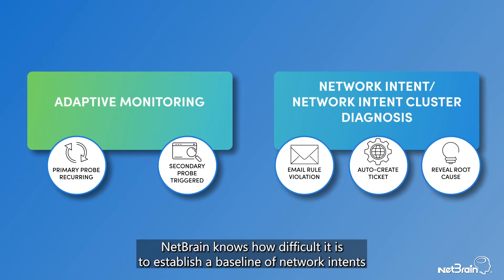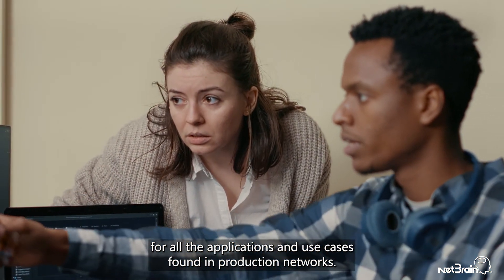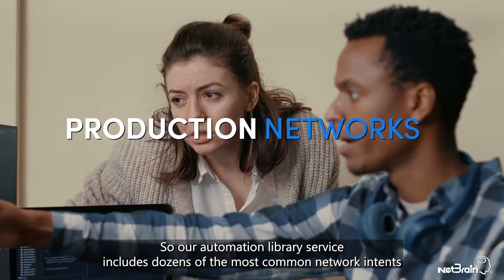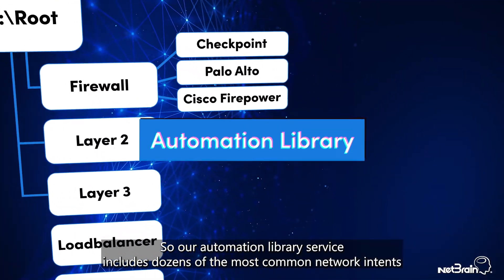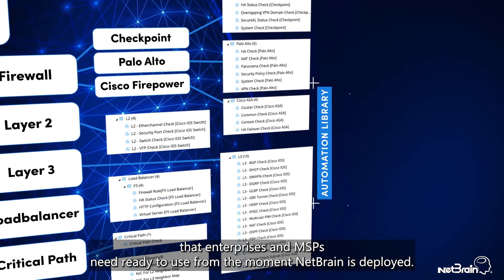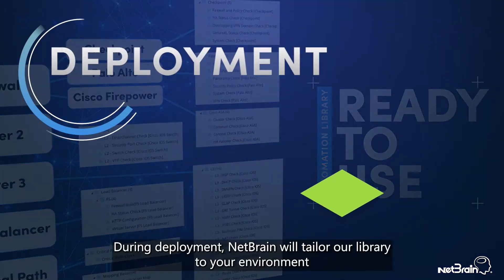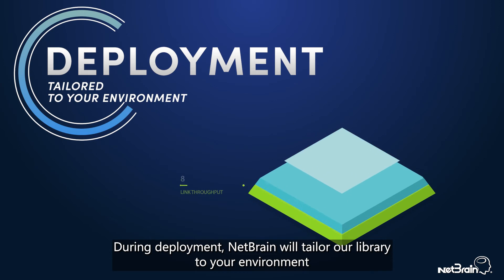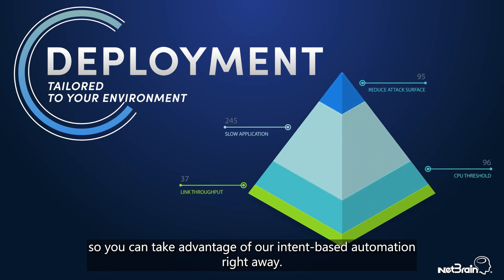NetBrain knows how difficult it is to establish a baseline of network intents for all the applications and use cases found in production networks, so our automation library service includes dozens of the most common network intents that enterprises and MSPs need, ready to use from the moment NetBrain is deployed. During deployment, NetBrain will tailor our library to your environment so you can take advantage of our intent-based automation right away.